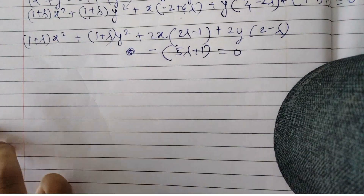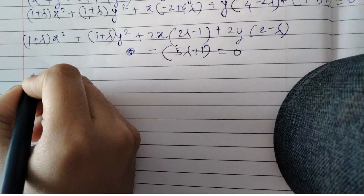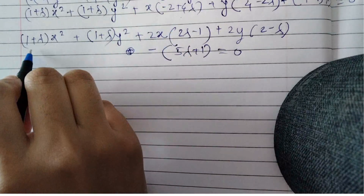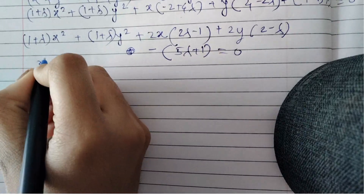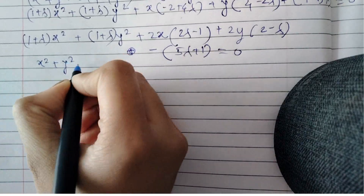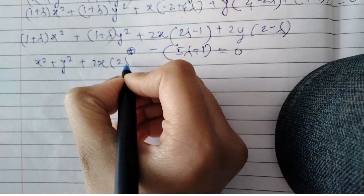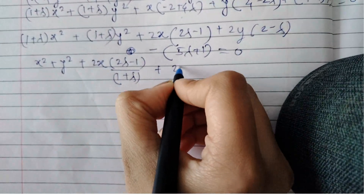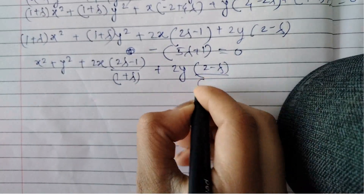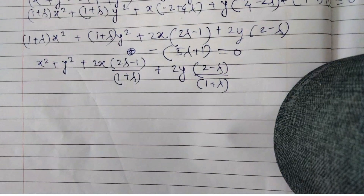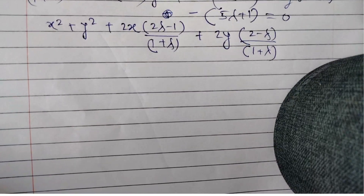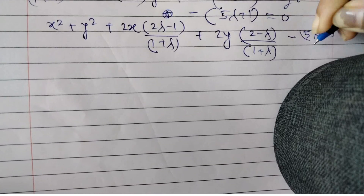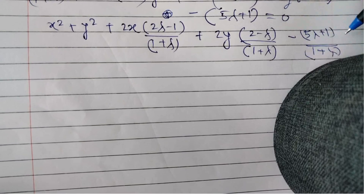We also need to make the coefficients of x² and y² equal to 1 to bring it into the standard form of a circle. So we divide all terms by (1 + lambda): x² + y² + 2x(2lambda − 1)/(1 + lambda) + 2y(2 − lambda)/(1 + lambda) − (5lambda + 1)/(1 + lambda) = 0.